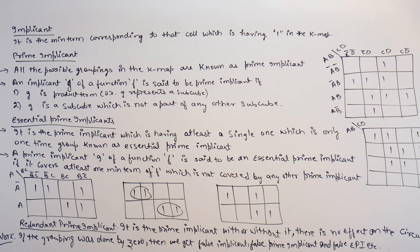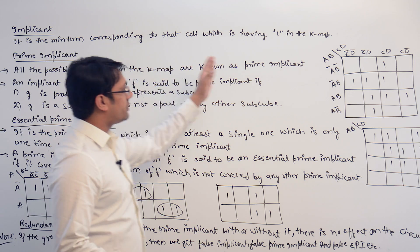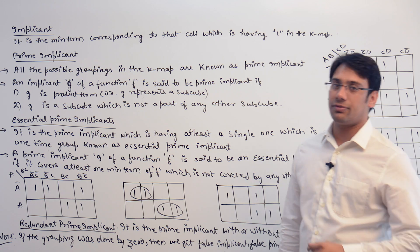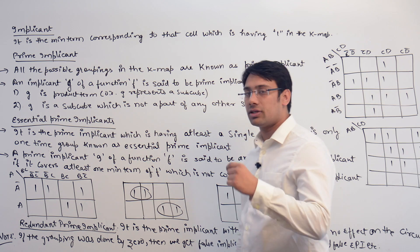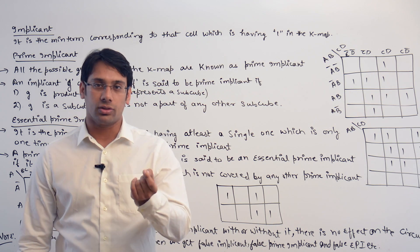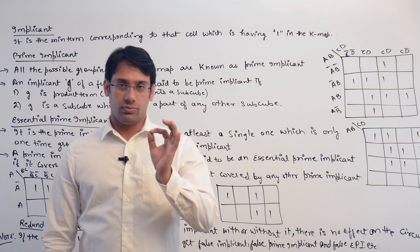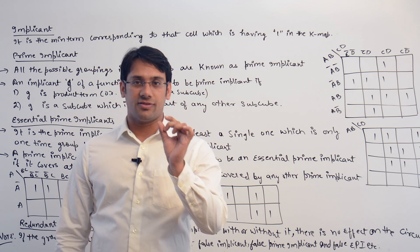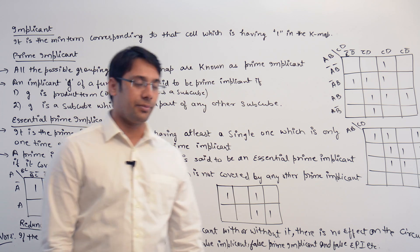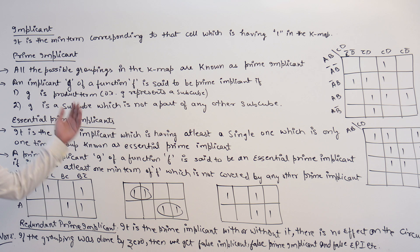An implicant is the min-term corresponding to a cell which is having one in the K-map. For example, in a K-map, even if we have a subcube of size one — a subcube of only one cell — then that itself is representing a min-term, or that itself is representing an implicant.